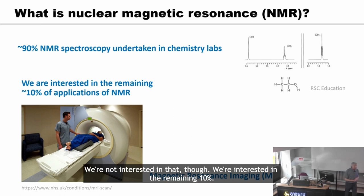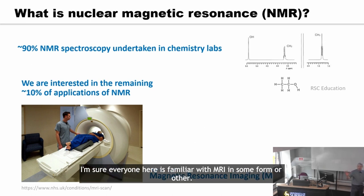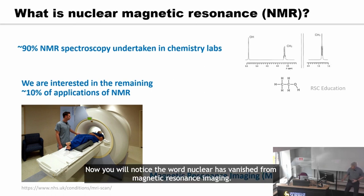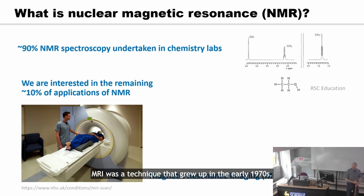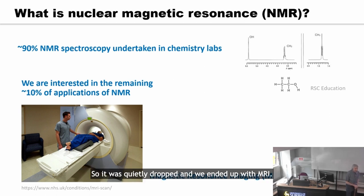We're interested in the remaining 10%, and key here is magnetic resonance imaging. I'm sure everyone is familiar with MRI in some form — you must have seen images from these huge superconducting magnets in hospitals. You'll notice the word 'nuclear' has vanished from 'magnetic resonance imaging.' MRI grew up in the early 1970s, when 'nuclear' was not a good word to be using, so it was quietly dropped.